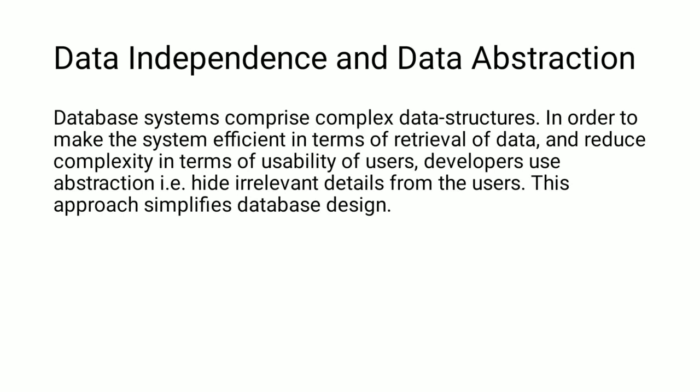There are several levels of abstraction that simplify user interaction with the system: physical level, logical level, and view level. Database systems comprise complex data structures. In order to make the system efficient in terms of retrieval of data and reduce complexity in terms of usability, developers use abstraction — that is, hiding irrelevant details from the user. This approach simplifies the database design.